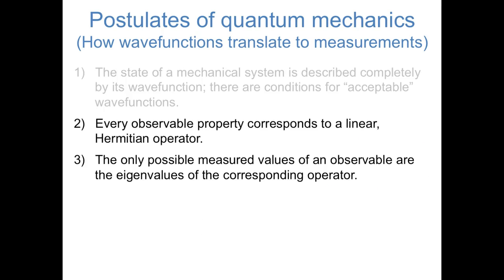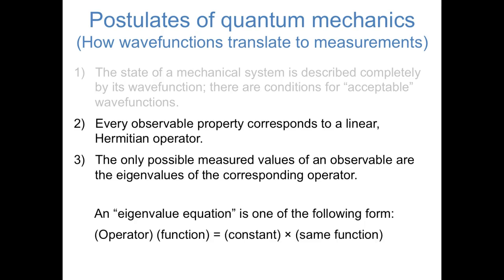The second and third postulates of quantum mechanics are pretty dense, and they really start getting into the rules of how quantum mechanics operates. The second postulate tells us that every observable property, whether it's position, momentum, or energy, corresponds to a linear Hermitian operator. And the third postulate tells us that the only possible values for us to measure when we take a measurement of an observable property are the eigenvalues of the corresponding operator. There's a lot to unpack here. First, we should define what we mean by an eigenvalue and by an eigenvalue equation. An eigenvalue equation is one where some operator applied to a function is equal to a constant times the same function. The function is called the eigenfunction and the constant is called the eigenvalue.